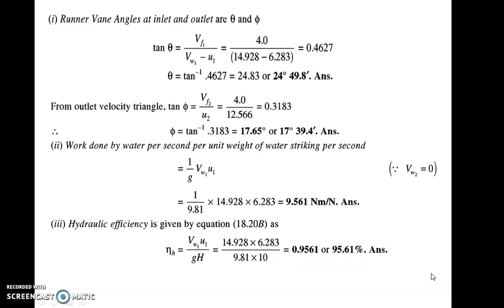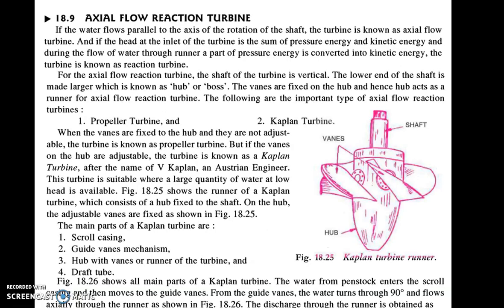Once you get the idea of the velocity triangle, whatever data is given and all the terms involved in the reaction turbine, all the numericals are very simple to solve. You have to make practice for the numericals. This concludes the radial flow reaction turbine. Now let us move towards the axial flow reaction turbine.